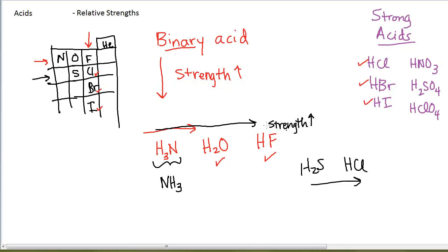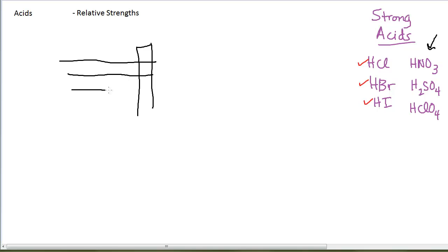If I look next at acids that contain oxygens, let's look at these sorts of acids. We call them oxyacids or oxoacids. We also see some trends based on both the periodic table and the presence of oxygens.